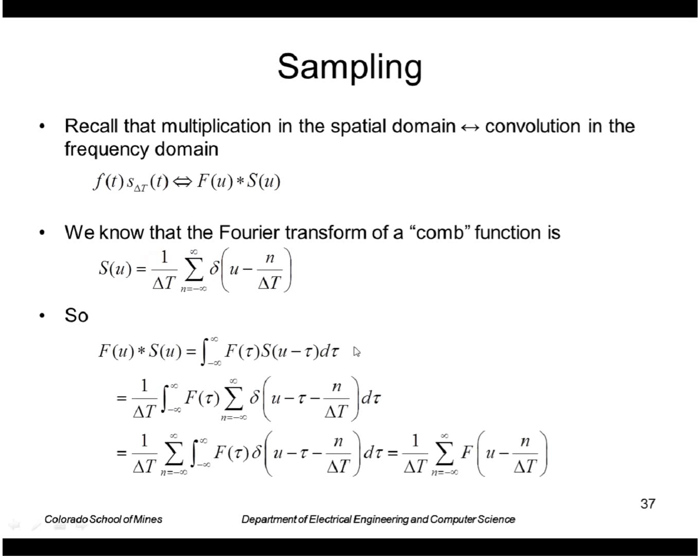If I plug that into the definition of the Fourier transform, what I get is that the result is sums of the original image transform f but shifted by n over delta t.